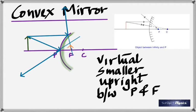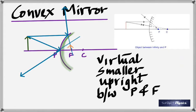Is the focal point of a convex mirror real or virtual? If you draw parallel rays falling on a convex mirror, they diverge — they all appear to come from the focal point but don't actually meet. Therefore, a convex mirror is a diverging mirror. A concave mirror is a converging mirror. When the school bell rings, students converge to school; when the home bell rings, they diverge — that's the difference.